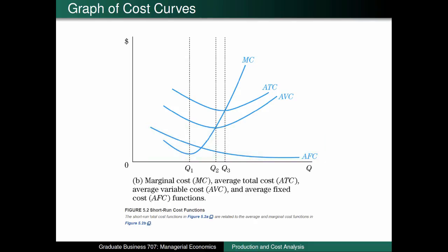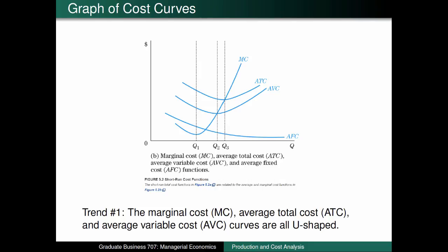We'll wrap up this recording by talking about why these cost concepts are illustrated in this manner. First, notice that the marginal cost, average total cost, and average variable cost curves are all U-shaped. Recall from our cost table for the pizza restaurant that the values for each of these cost concepts initially decrease when additional pizzas are produced, but because of the law of diminishing marginal returns, these cost concepts eventually start to increase when large amounts of pizzas are made.